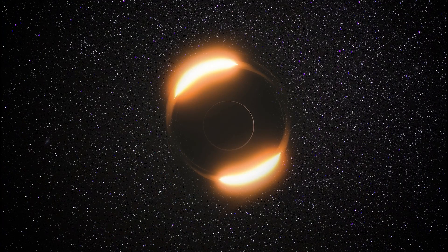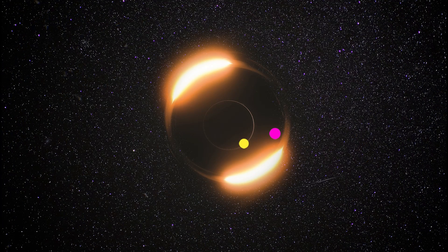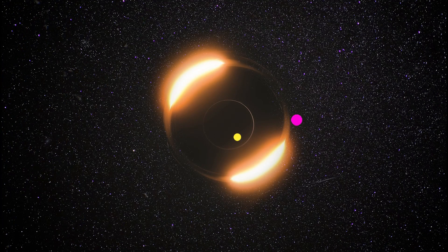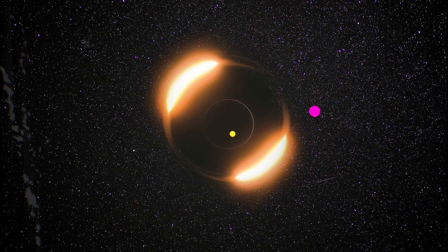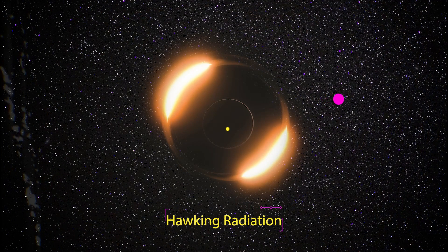So Hawking theorized that a virtual particle can pop into existence right at the edge of the event horizon with one entangled particle sucked into the black hole while the other particle survives. Because the particle no longer has a partner, it can't vanish. These are the particles that can escape the black hole and are called the Hawking radiation.